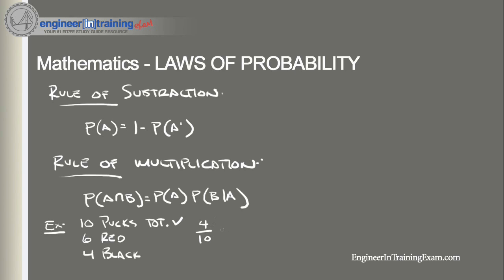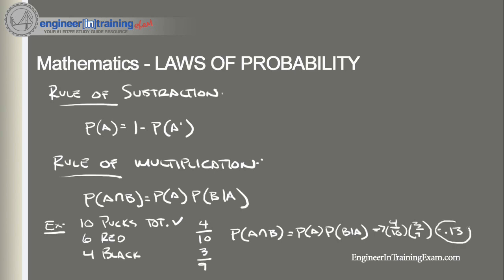Since we're not replacing that puck, after grabbing the first black puck there are nine pucks remaining, three of which are black. So the probability of choosing a black puck on the second pick is 3/9. Therefore, P(A∩B) equals P(A) times P(B|A), which is 4/10 times 3/9, equal to approximately 0.13.